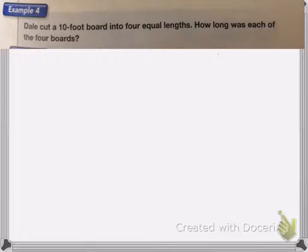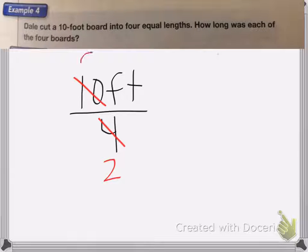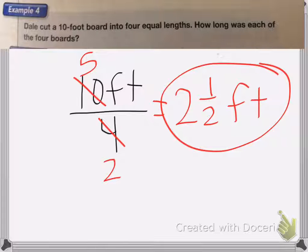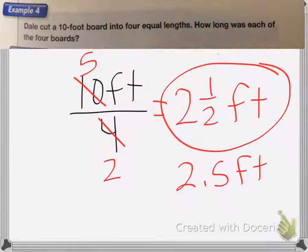In this one, we have Dale cut a 10 foot board into four equal lengths. How long was each of the four boards? So I have 10 feet, and I'm cutting it into four pieces. We're going to reduce, four becomes a two, 10 becomes a five. So five halves is the same as two and one half feet. Now I can leave this as it is, I could also say 2.5 feet if I wished, because I can cut a piece of board into pieces smaller than a foot. But we have inches that we can cut it into.